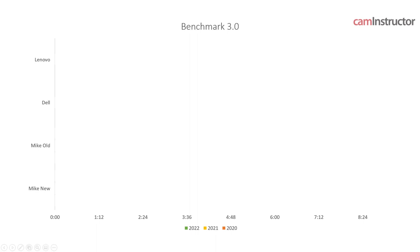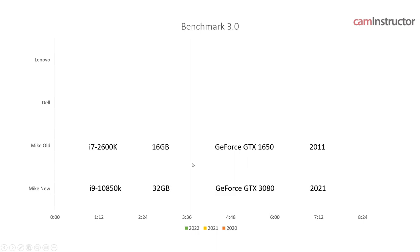One of the reasons I'm digging into this topic now is that I just recently upgraded computers. My old computer was running an Intel i7-2600 — a second generation i7 chip that came out around 2011. The new computer I upgraded to is an i9, the latest 10th gen chip, with 32 gigs of RAM and a GeForce GTX 3080.